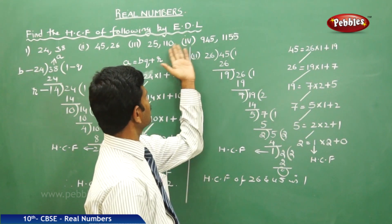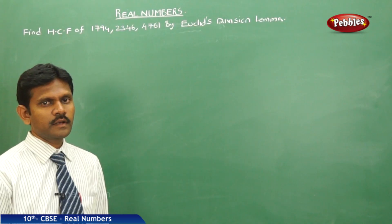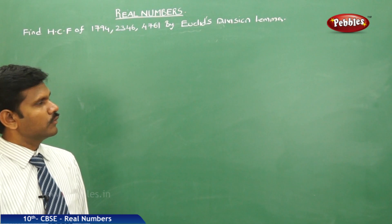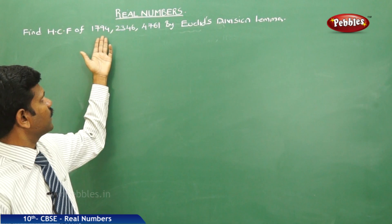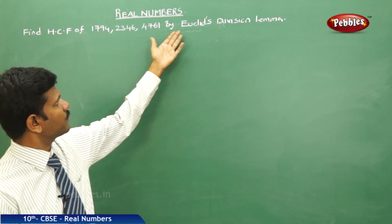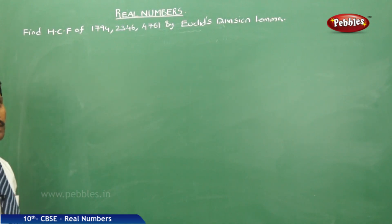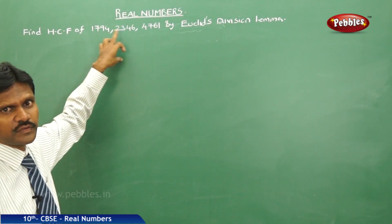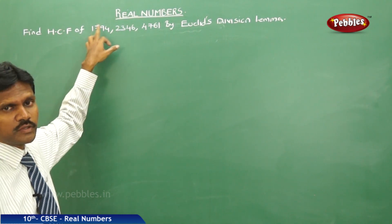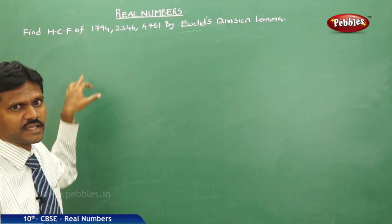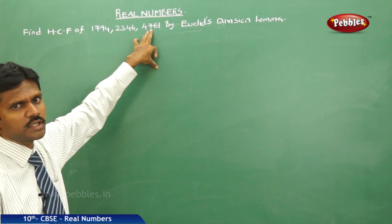The next model is: find the HCF of three numbers using Euclid's Division Lemma. First of all, find the HCF of any two of the numbers. With the HCF found, proceed to find the HCF with the third number.